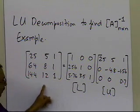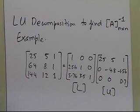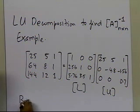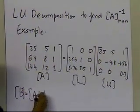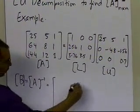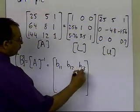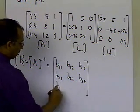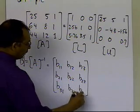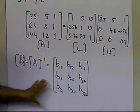This decomposition of the matrix into L times U is shown in a separate segment. Now, how are we going to find the inverse? If B is the inverse of A, then B is denoted by its individual terms as B11, B12, B13, B21, B22, B23, B31, B32, and B33 — a 3-by-3 matrix which we are trying to find.